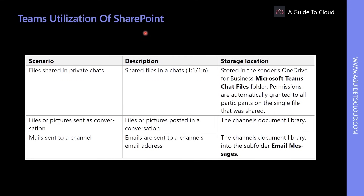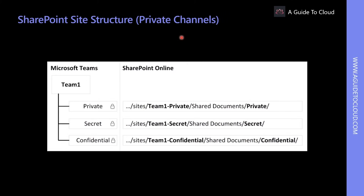Teams not only supports manual upload of files to its document library, it also supports storing resources in SharePoint Online and OneDrive for Business. Files shared in private chats are stored in the sender's OneDrive for Business. Pictures and files sent in a channel conversation are stored in the channel's document library. Emails sent to a channel are stored in a subfolder called Email Messages. When a team member creates a new private channel, a whole new site collection is created and the creator is added as site collection owner.